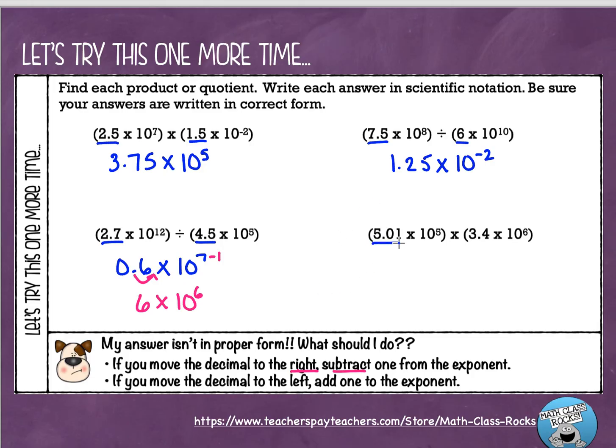All right, last one. Let's multiply these coefficients. I've got 5.01, and I'm going to multiply that by 3.4, and that's going to give me 17.034 times. And we are going to add these exponents together, which is going to give us 10 to the 11th power. All right, now again, at first glance, I might say this looks like some scientific notation. However, we can't have two numbers in front of the decimal point, right? We can only have one number.